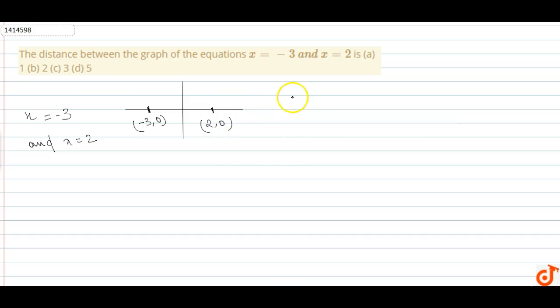We know one property: when x is equal to something or y is equal to something, they are parallel to y-axis and x-axis respectively. This is a property.